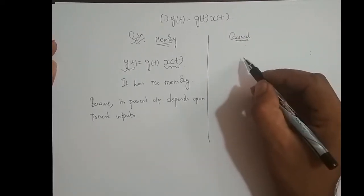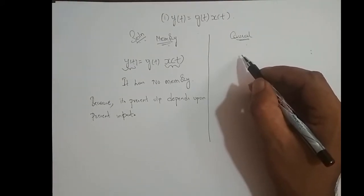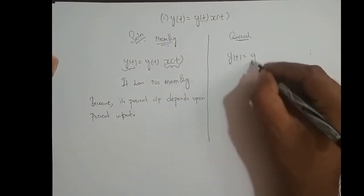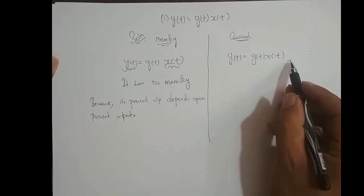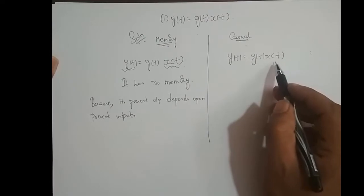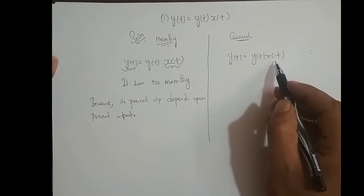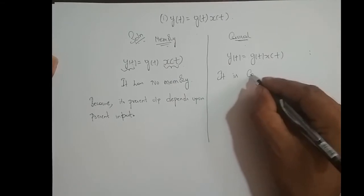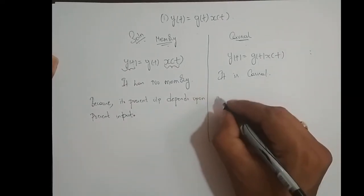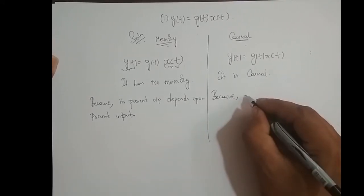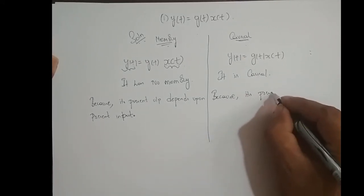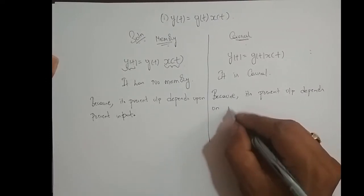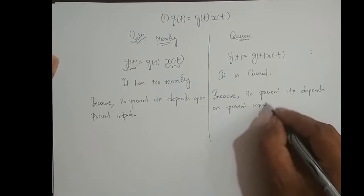Now for causality: a system is non-causal if the present output depends upon future input value. For y(t) = g(t)·x(t), the current output depends upon current input value — present output depends upon present input value. Therefore, the system is causal, because its present output depends on present input.